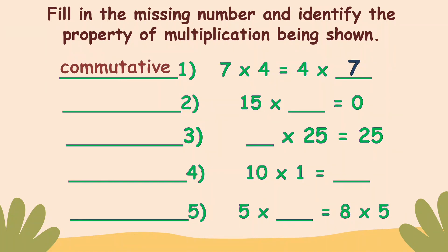Number two: fifteen times blank equals zero. The answer is zero. And that is the zero property.